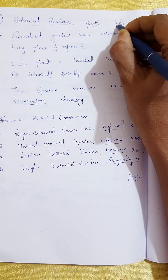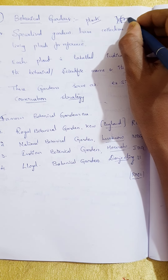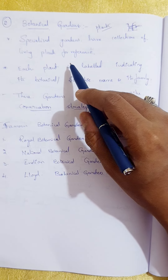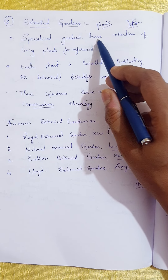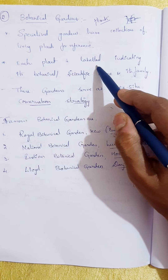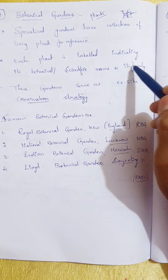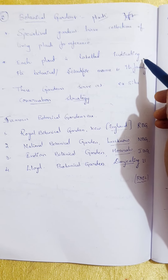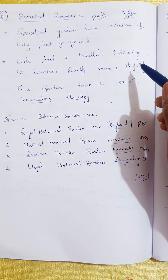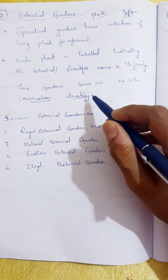In botanical gardens, you might have seen green color plates given for each plant, on which the names and classification of the plants are written. A botanical garden is a specialized garden that has collections of living plants for reference purposes. Each plant is labeled indicating its botanical or scientific name and its family, so we can identify them easily — for example, Anacardiaceae, Sapindales, or Fabaceae.